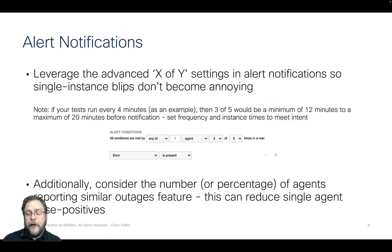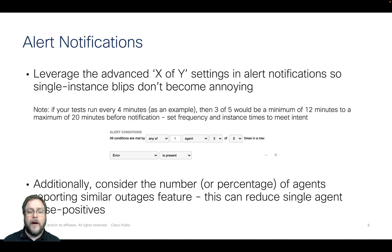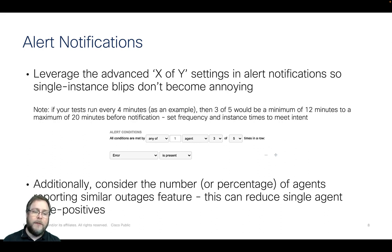For alert notifications, the leading practice is to use the X of Y settings. We don't want to be alerted by single blips on the internet — this is a shared medium, routes need to be reestablished, and reacting to every single blip is going to be unnerving. Set up the X of Y: if you run a test every four minutes and you do a three-of-five measurement, that's a minimum of 12 minutes to a maximum of 20 minutes before notification. Set your frequency to meet your intent.